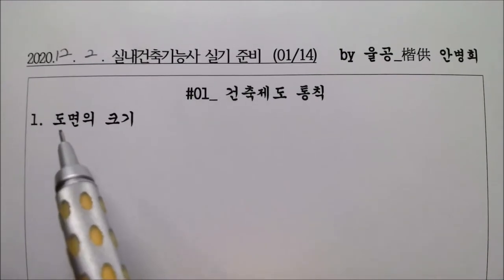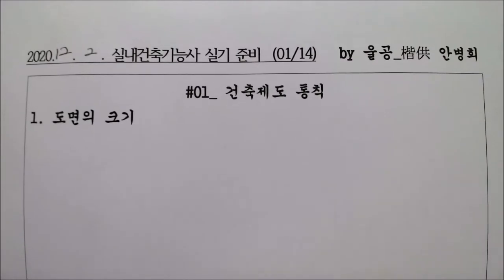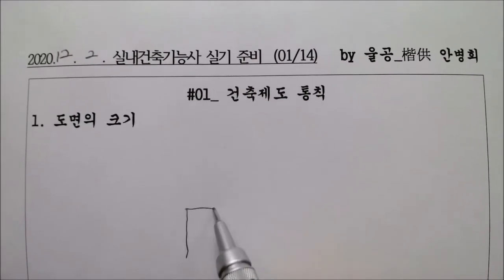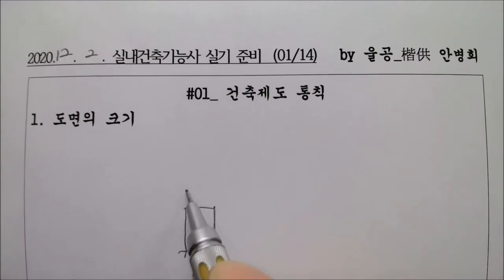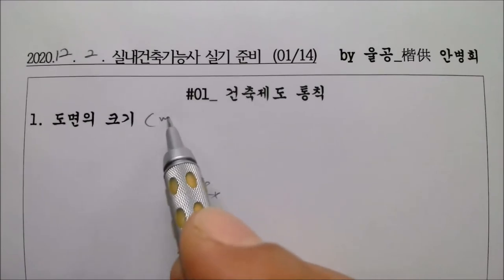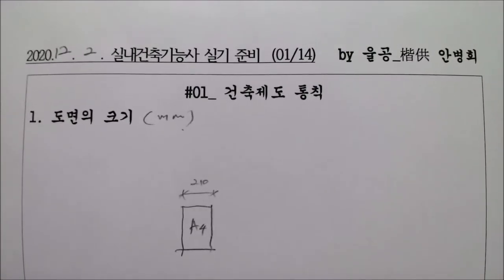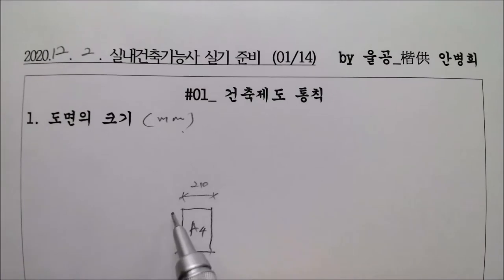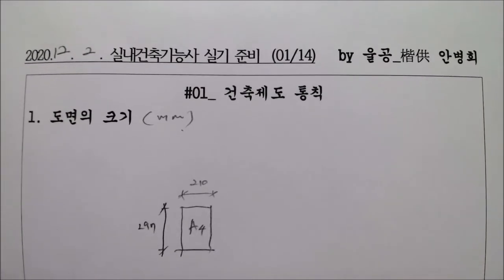선생님이 오늘부터 하나씩 할 건데요. 도면의 크기부터 한번 볼게요. 여러분들 기억해 봅시다. 이게 A4 용지라고 합시다. A4 용지의 크기가 얼마입니까? 단위는 밀리미터입니다. A4 용지가 210에 297입니다.